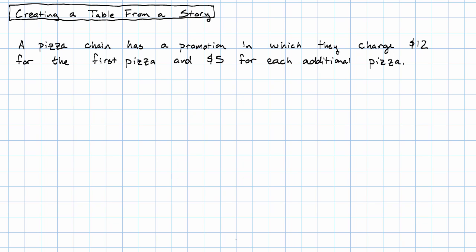What are our two variables here? Well, the first variable is how many pizzas we buy, and the second variable is how much money we have to pay, and I'll be specific and say that we're going to measure the money in dollars.